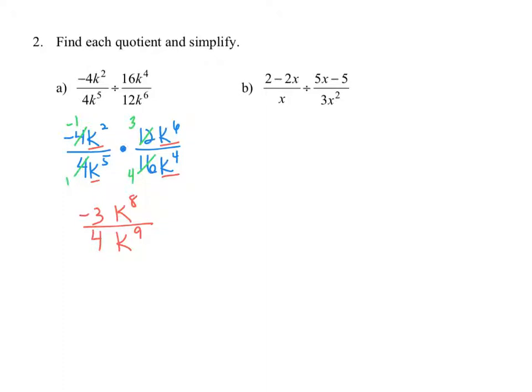We can write this as negative three-fourths times k to the negative one, since 8 minus 9 equals negative 1. But it's common to write our final answer using positive exponents only, so we write our final answer as negative three divided by 4k.